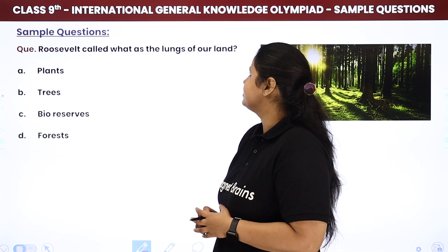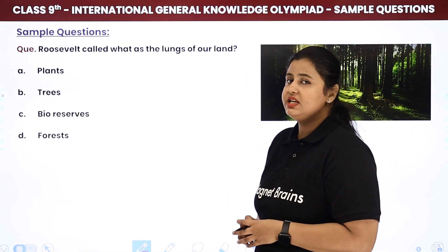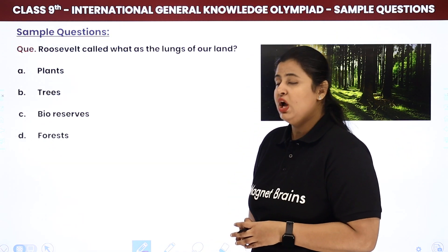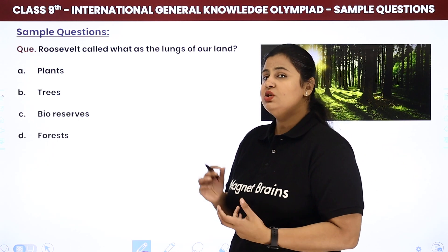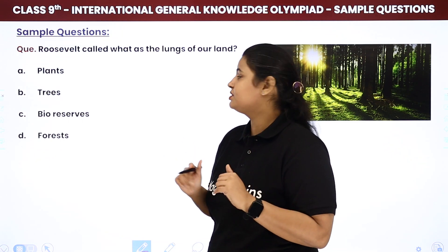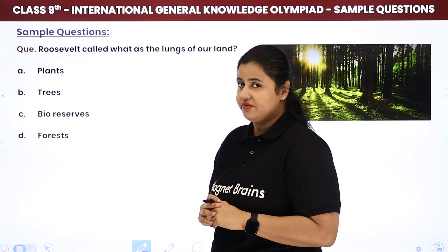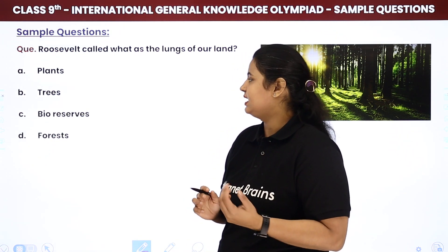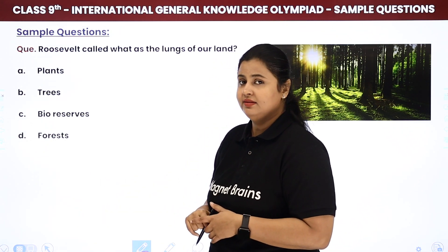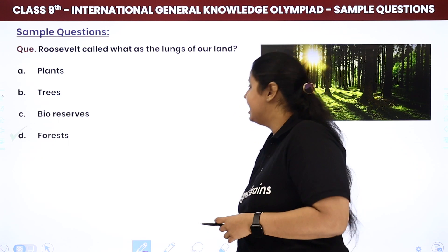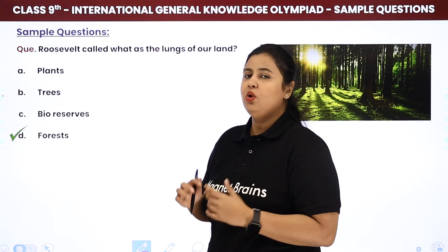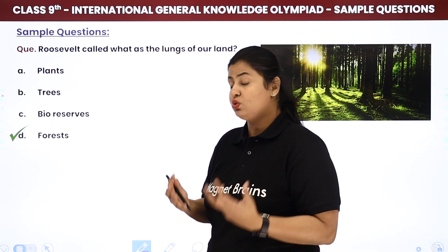The third question: Roosevelt called what as the 'lungs of a land'? We talked about Franklin D. Roosevelt, who was the 32nd president of the United States of America. The options were plants, trees, bio-reserves, and forests. The answer is D — forests. Roosevelt said forests are the lungs of the land, and without them, survival in the world would be impossible.